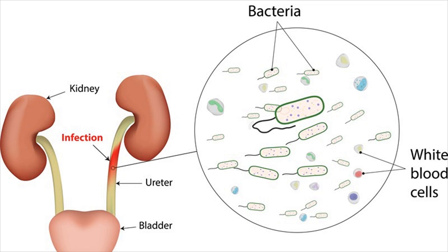Infections of the urethra — urethritis — and the bladder — cystitis — are referred to as lower urinary tract infections. Involvement of the ureters and the kidneys — pyelonephritis — is referred to as upper urinary tract infections. Therefore, the key difference between lower and upper urinary tract infections is determined by the anatomical involvement.